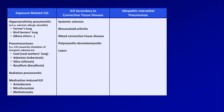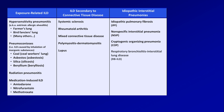Next are the so-called idiopathic interstitial pneumonias. This is the category that learners and clinicians both find most difficult to keep straight because they have very similar presentations, differing only in time course, a poorly understood pathogenesis, and rather unwieldy names often abbreviated into acronyms. They are: idiopathic pulmonary fibrosis, nonspecific interstitial pneumonia, cryptogenic organizing pneumonia, respiratory bronchiolitis interstitial lung disease, desquamative interstitial pneumonia, and acute interstitial pneumonia.